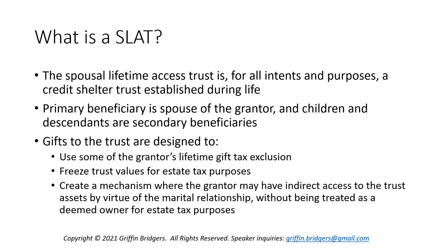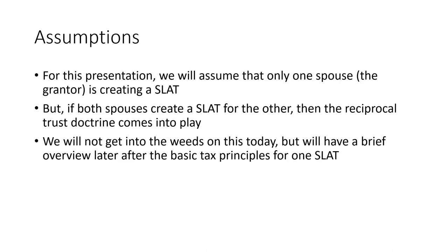You can either give them a current interest in the SLAT or just give them a contingent or vested remainder interest. The general goals are that you want to use some of the grantor's lifetime gift tax exclusion, because Congress is threatening to take that away — it could be reduced by half as of 2022, if not sooner. You also want to freeze trust values for estate tax purposes, and create a mechanism whereby there's not a permanent gift that can never be accessed by the grantor.